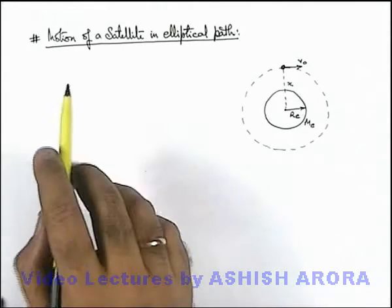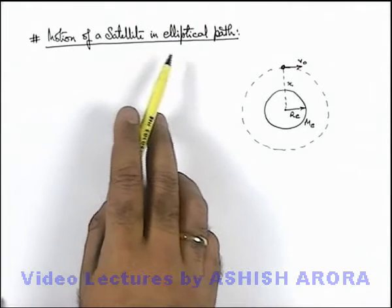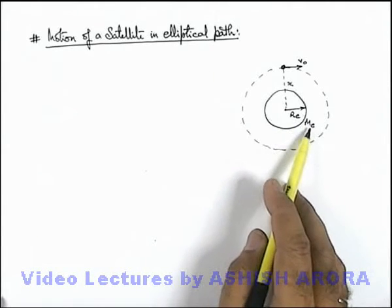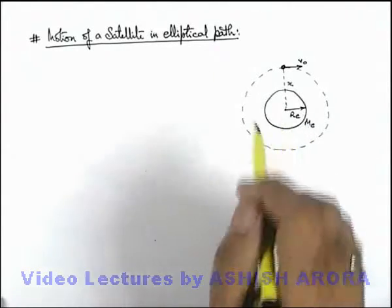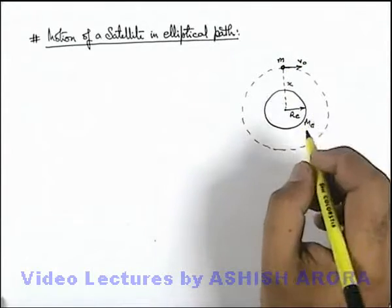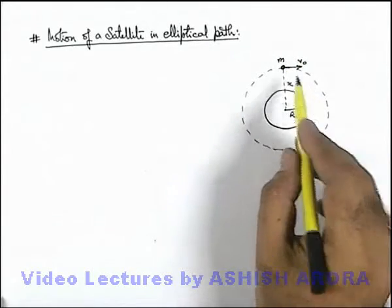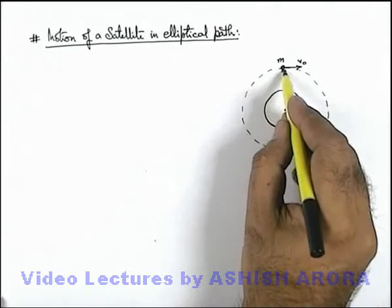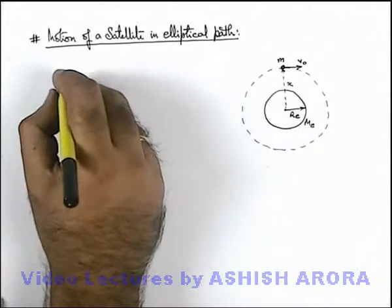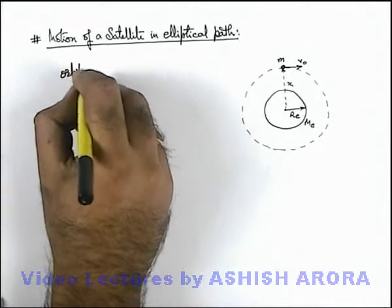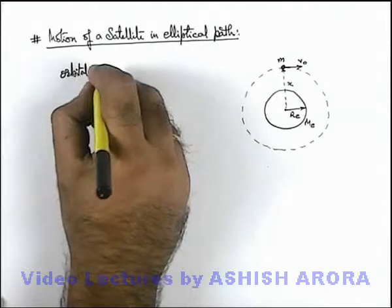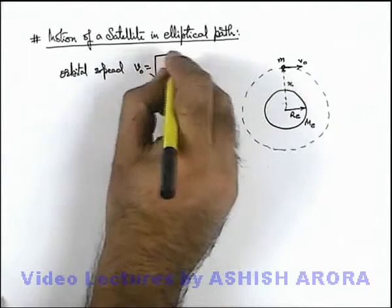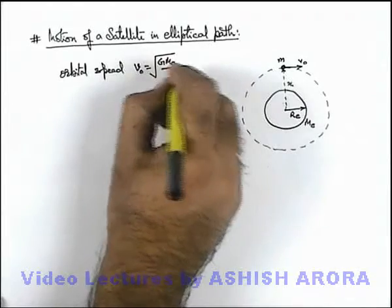Let's discuss the motion of a satellite in an elliptical path. Here we can see around Earth of mass Mₑ and radius Rₑ, a satellite of mass m is moving in a circular path with orbit radius x. So we can simply write here that orbital speed can be written as v_orbital = √(GMₑ/x).